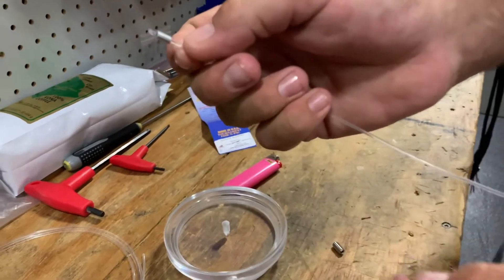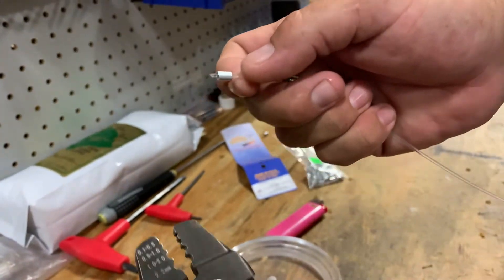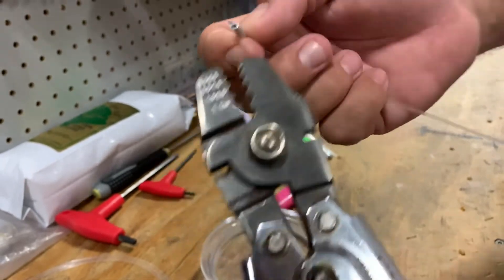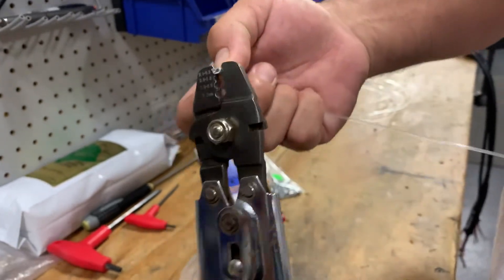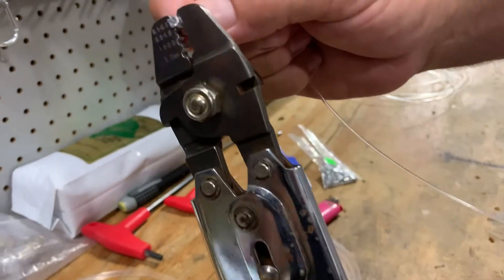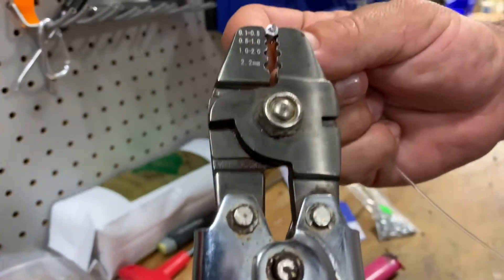Feed that through. Make sure you have a little bit of tag end and take your crimpers. You want to crimp on the 0.1 to 0.5, the smallest crimp you have on your crimpers. Go ahead right in the center, crimp it down nice and tight. Then bring the crimp just to the outside of the slot.